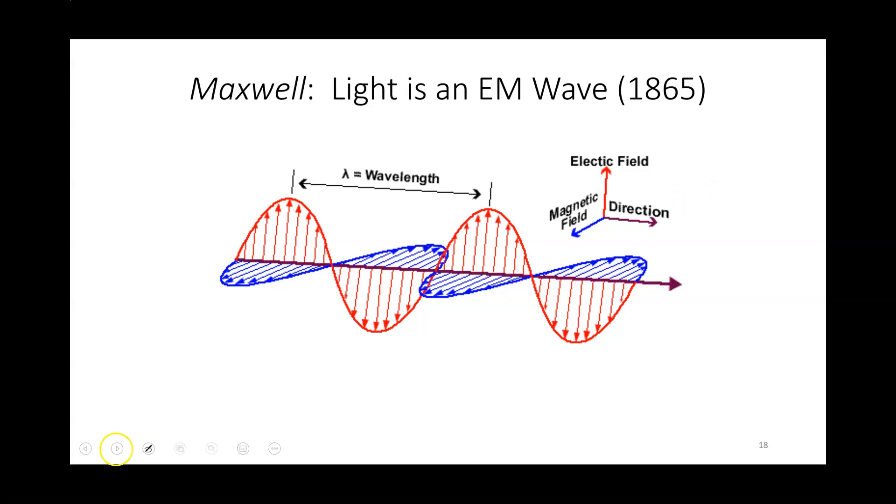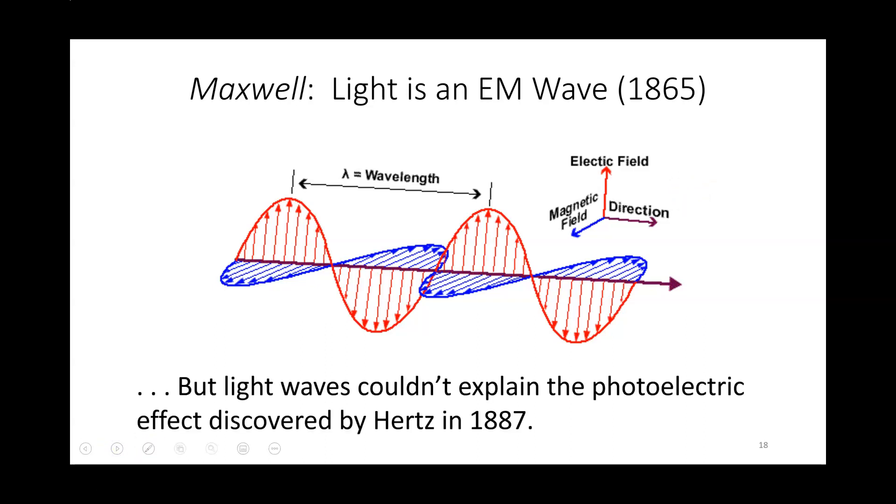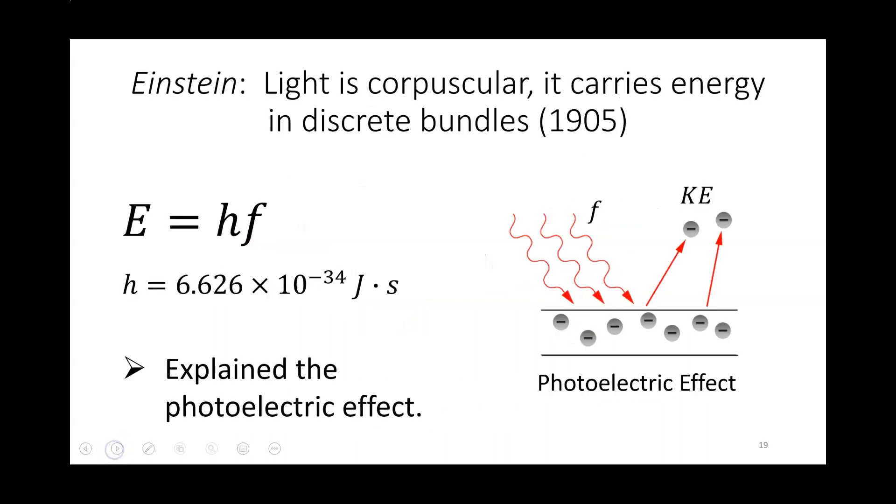However, shortly thereafter, the person who confirmed the wave properties of light, Hertz, came up with another discovery called the photoelectric effect, which didn't obey a wave description of light. The photoelectric effect is this idea where if you shine light with a certain frequency, you can eject electrons out of a metal. But it turns out that this wasn't something that we could understand in terms of wave theory.